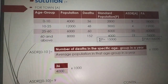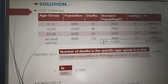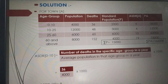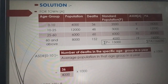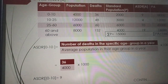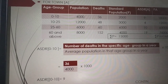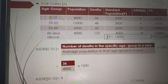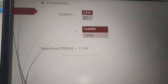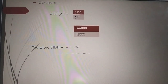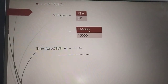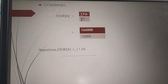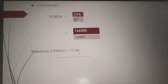After finding ASDR of A, multiply the standard population by ASDR of A to get the PA values. 2000 into 9 gives 18,000; 3000 into 4 gives 12,000; 6000 into 10 gives 60,000; 4000 into 19 gives 76,000. Adding all PA values gives summation PA as 1,66,000. Adding all P values gives summation P as 15,000. Substituting in the formula: 1,66,000 divided by 15,000 gives STDR of A as 11.06.